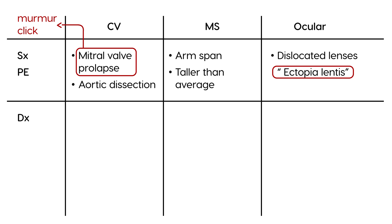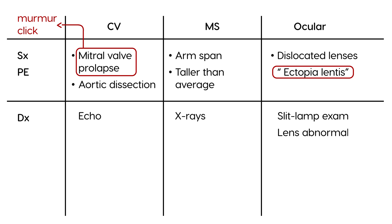Diagnostic testing can be very helpful. For the cardiovascular system, you do an echocardiogram, which will show the mitral valve prolapse. For the musculoskeletal system, you do x-rays of the skeletal system — the hand, the spine — because many of these patients can also have scoliosis.